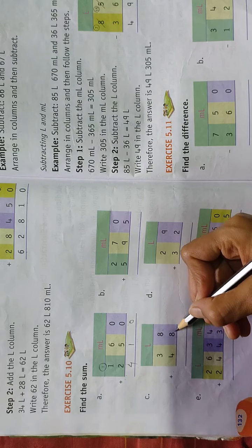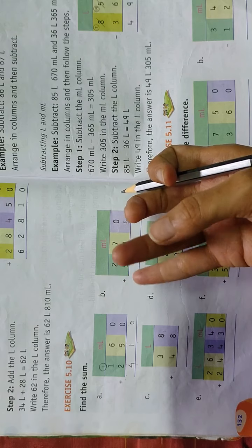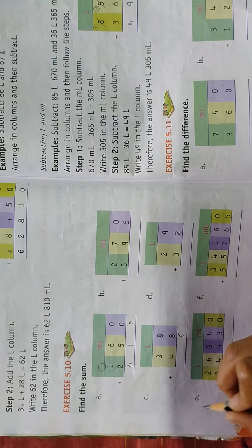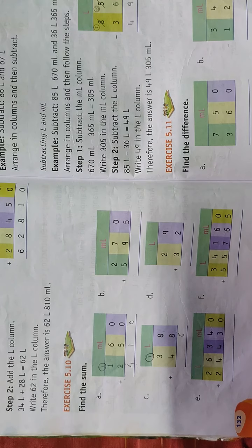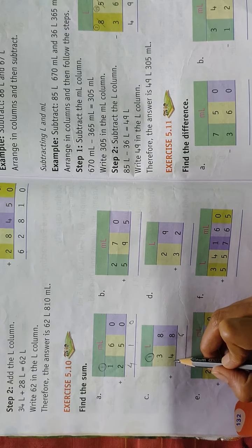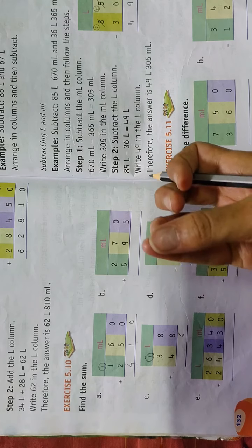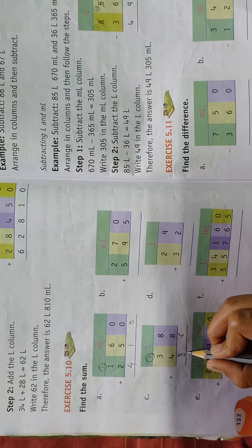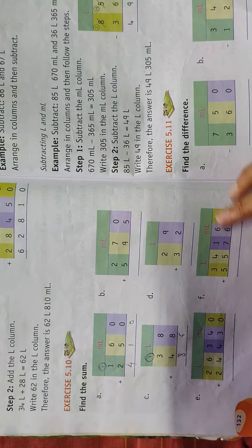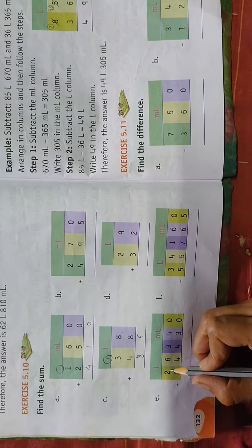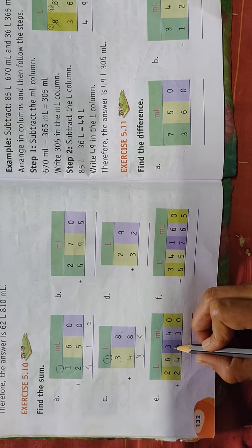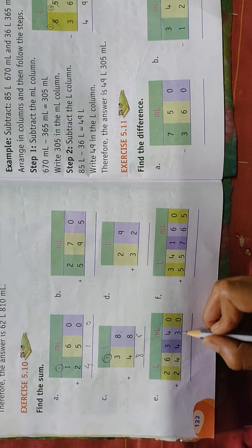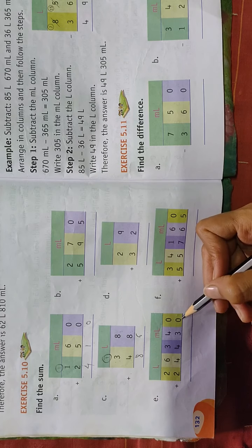Next: 38 liters + 48 liters. Ones column: 8 + 8 = 16, write 6 in the answer place and carry 1. Tens column: 3 + 4 = 7, plus 1 carry = 8. The answer is 86 liters.